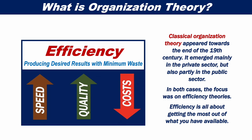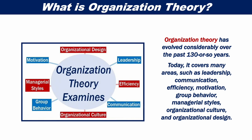Classical organization theory appeared towards the end of the 19th century. It emerged mainly in the private sector, but also partly in the public sector. In both cases, the focus was on efficiency theories. Efficiency is all about getting the most out of what you have available. Efficiency theory has evolved considerably over the past 130 or so years.